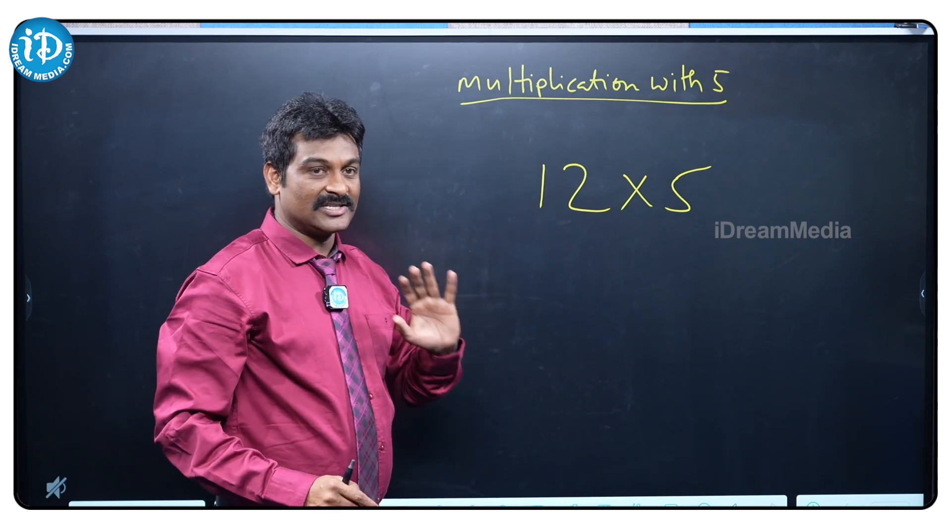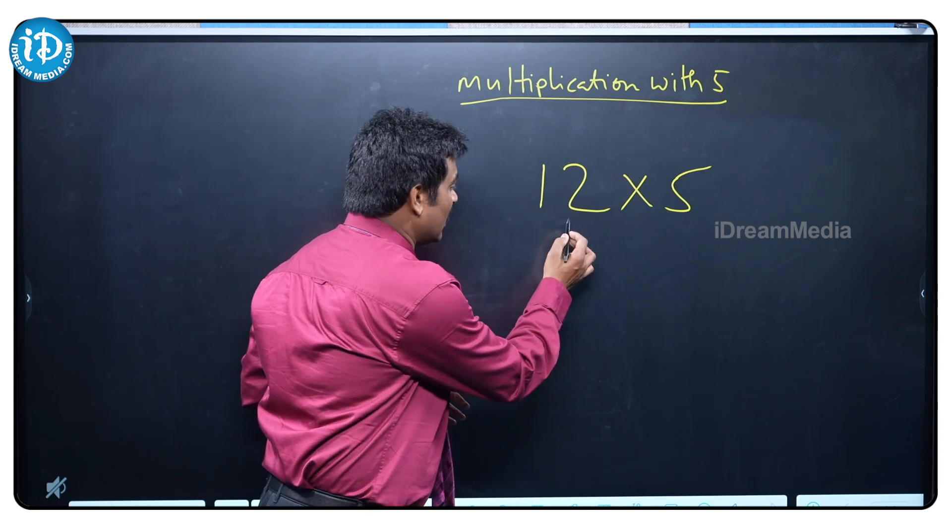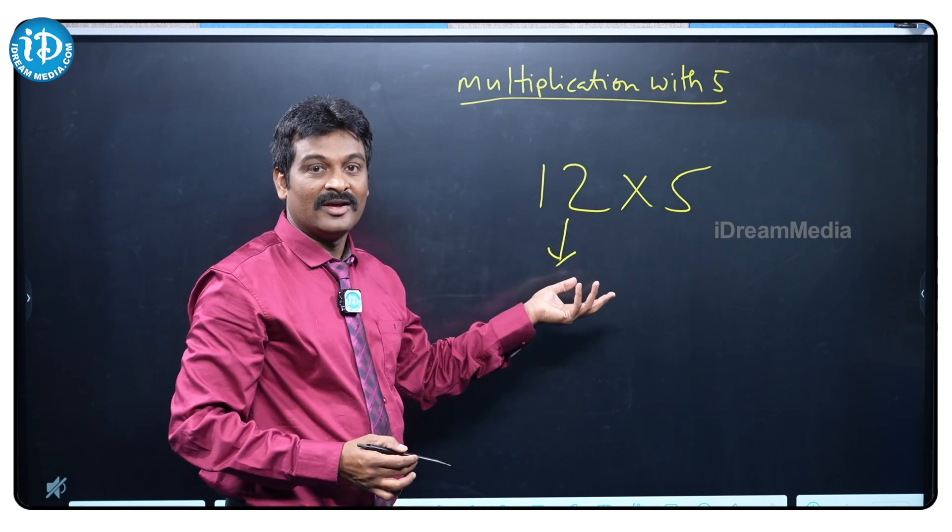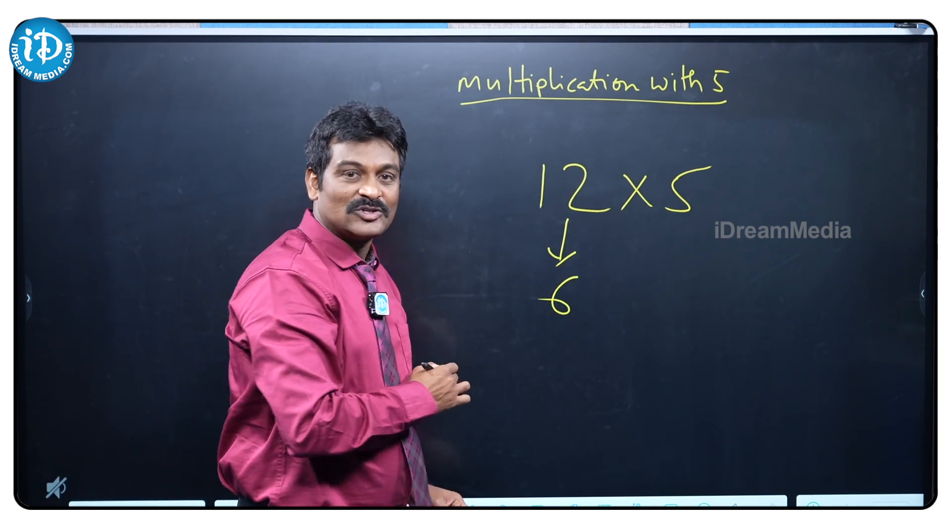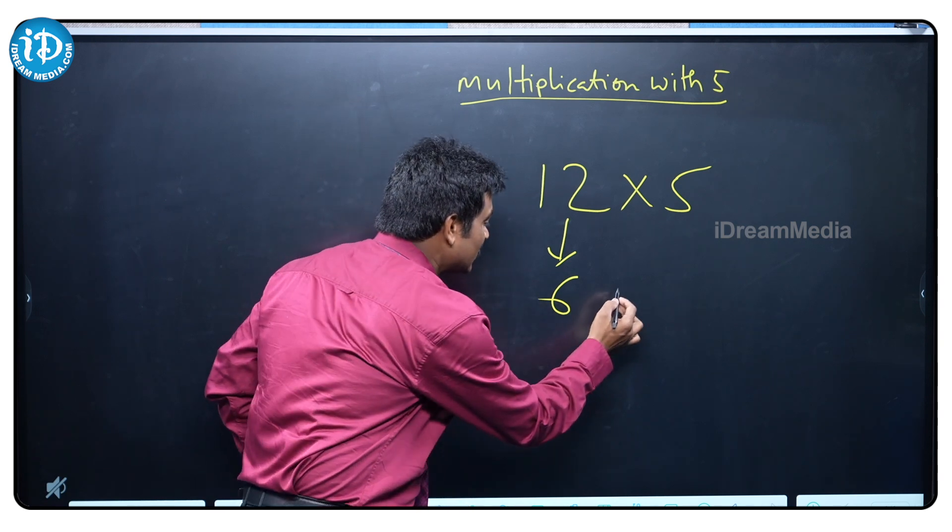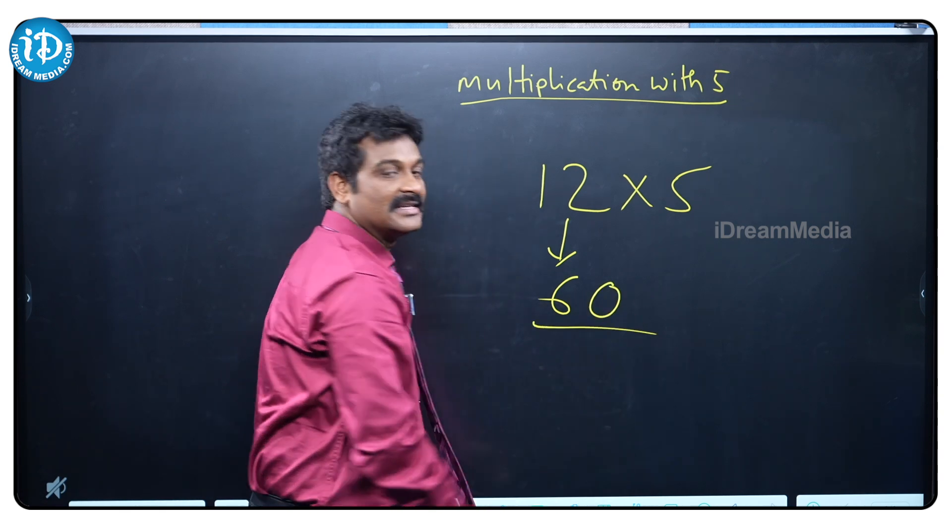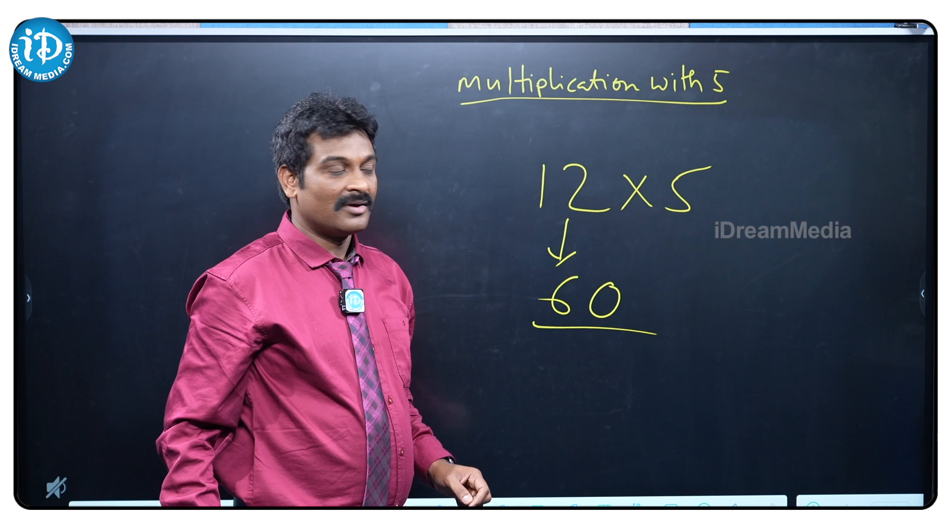No need to do like that. Just we need to calculate, this is 12, what is the half of 12? Half of 12 is 6 only. Just keep a 0 beside, that's it, your answer is 60.